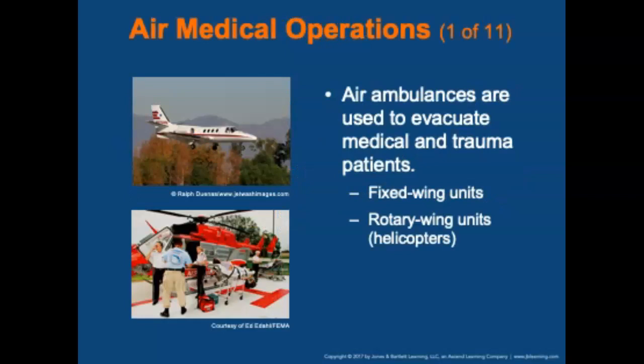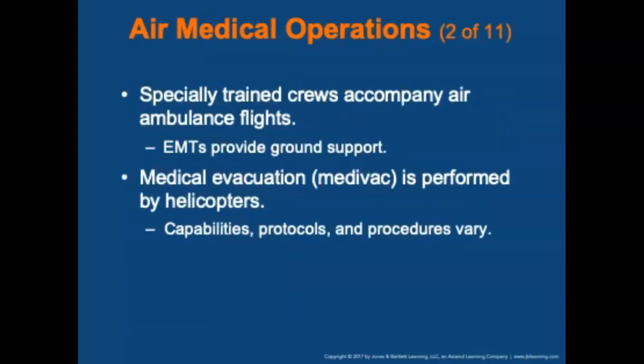Air ambulance operations: air ambulances are often used to evacuate medical and trauma patients. There are two specific types. Fixed-wing units are used for inter-hospital patient transfers over distances greater than 100 to 150 miles. Rotary-wing units such as helicopters are used efficiently for shorter distances. Special trained crews accompany air ambulance flights, and EMT duties are limited to providing ground support. Familiarize yourself with the capabilities, protocols, and methods for accessing helicopters in your area. Medical evacuations — medevac — are performed exclusively by helicopters, and medevac capabilities, protocols, and procedures vary between EMS systems.